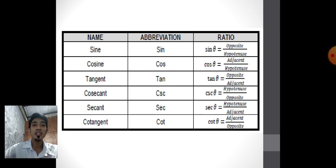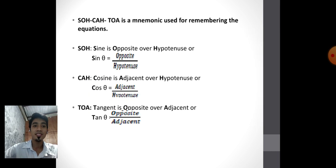Generalization. Let us now determine the important key points to remember. These are the trigonometric ratios: sine A is opposite over hypotenuse; cosine A is adjacent over hypotenuse; tangent A is opposite over adjacent; cosecant A is hypotenuse over opposite; secant A is hypotenuse over adjacent; cotangent A is adjacent over opposite. Remember SOH-CAH-TOA: sine is opposite over hypotenuse, cosine is adjacent over hypotenuse, tangent is opposite over adjacent.